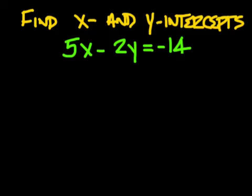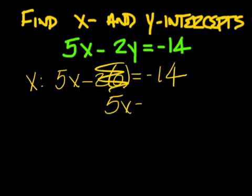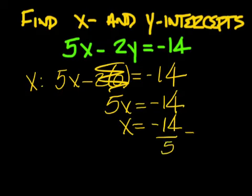Alright, to find the x-intercept, we have to put a 0 in for the y. And when we do that, it's going to cancel out that term, leaving us with 5x equals negative 14. We'll divide that negative 14 by 5, making a mixed number of negative 2 and 4 fifths for the x-intercept.